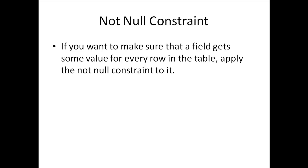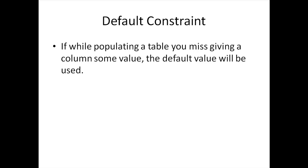Let's start with the NOT NULL constraint. If you're creating a table and there's a field that you want to have a value for each and every row, you would use a NOT NULL constraint on that field. For example, if you have a table with fields like name, ID, and email address, and you want the ID field to always have a value, you'd apply NOT NULL to it. If you miss providing a value for that field during an INSERT, you'll get an error and the statement won't be processed.